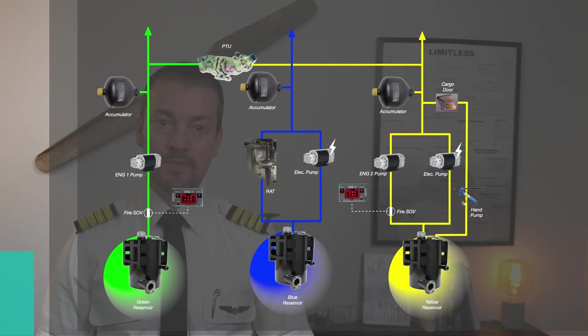The PTU is inhibited during first engine start. So when we go out and we start up the aircraft, we normally start engine number two first, you're going to see why in just a second. As you start engine number two, you will have pressure right here from the engine driven pump and the yellow system will pressurize.